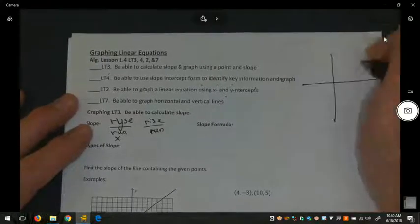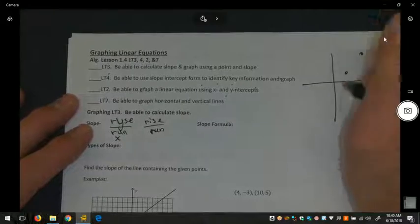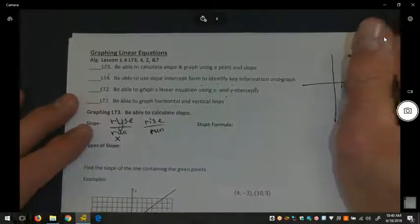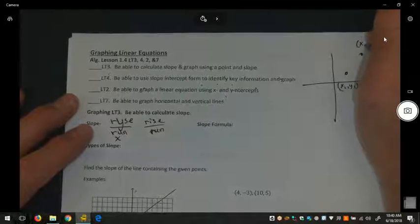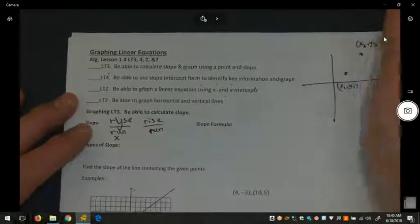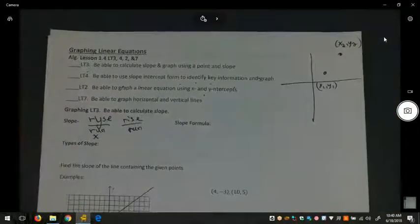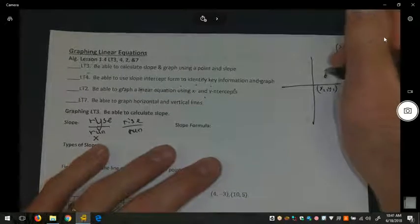So if I have two points, and this one has an x sub 1, y sub 1 coordinate, and this one has an x sub 2, y sub 2 coordinate, we don't know what the numbers are.